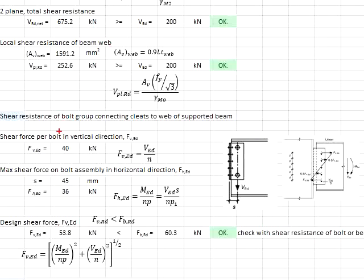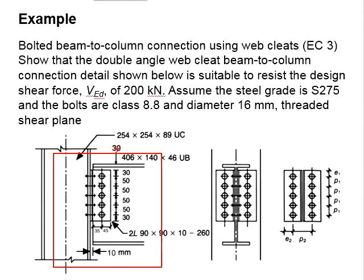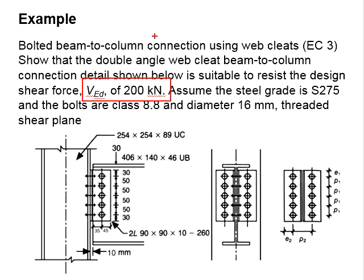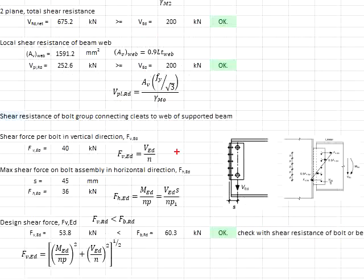First, we need to determine the vertical component of the force. It is calculated from the formula here, which is the vertical shear force divided by the number of bolts. Referring to the diagram here, there are 5 units of bolts and the vertical force is 200 kN. That gives you 200 divided by 5, which is 40 kN load.